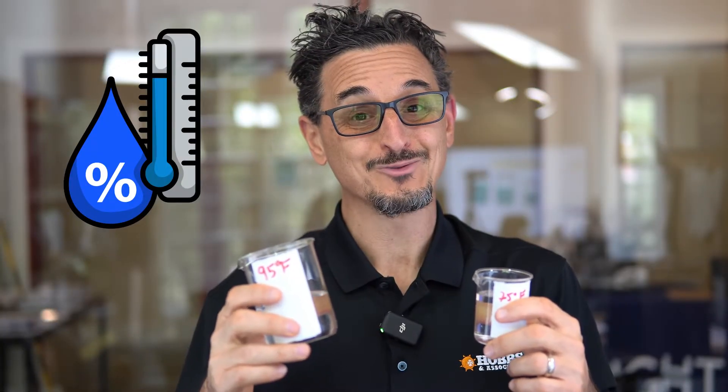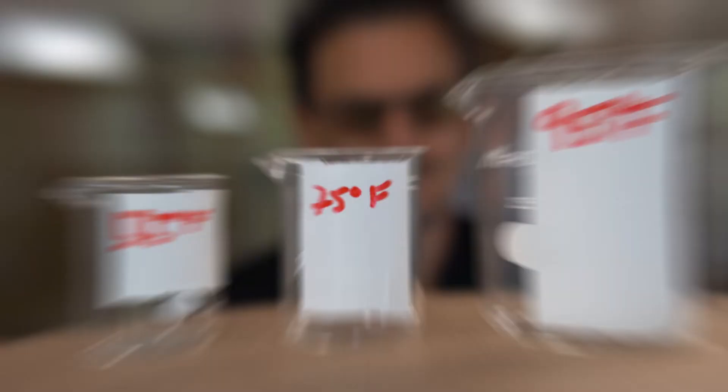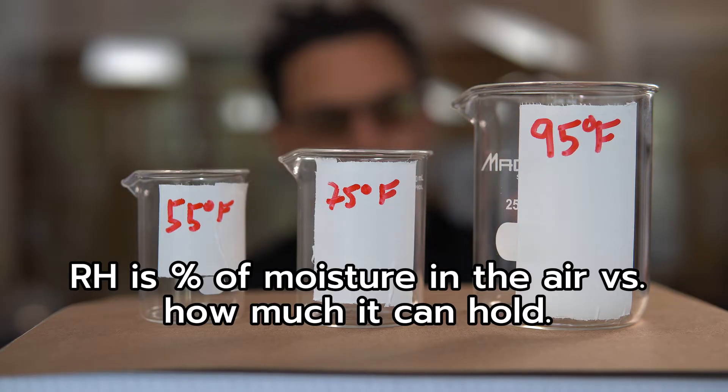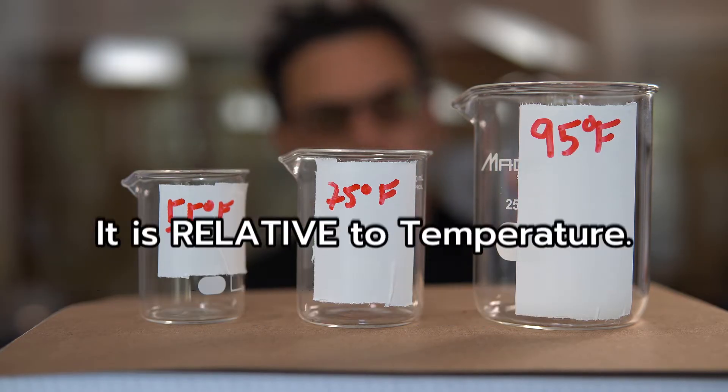So in this video, I'm gonna use these beakers of water to explain relative humidity. Relative humidity is the amount of moisture in the air versus how much it could actually hold.